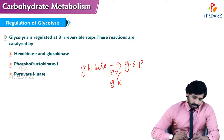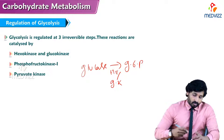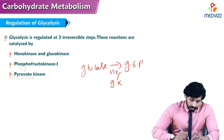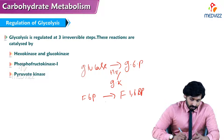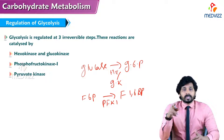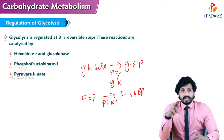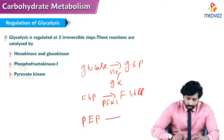The third step is mediated by phosphofructokinase 1, also known as PFK1, where fructose-6-phosphate is converted to fructose-1,6-bisphosphate. The tenth step is mediated by the enzyme pyruvate kinase, where phosphoenolpyruvate is converted to pyruvate.